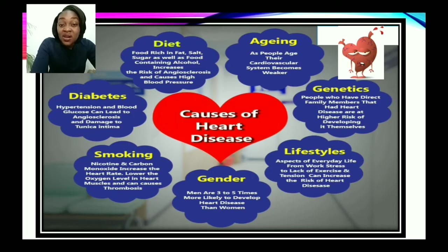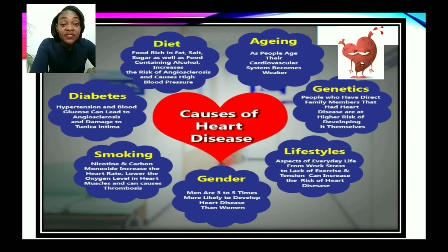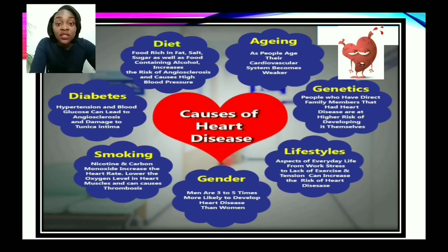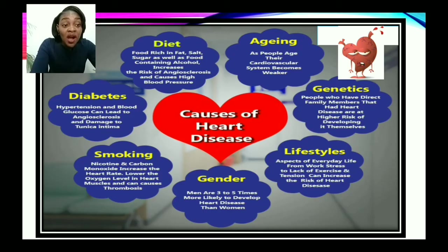What are the causes of cardiovascular disease? First, aging — as people age, their cardiovascular system becomes weaker. The cardiovascular system refers to the blood, blood vessels, and the heart. Next, genetics — people who have direct family members that had heart disease are at a higher risk of developing it themselves. Age and genetics are uncontrollable factors. Lifestyle is another factor — aspects of everyday life, from work stress to lack of exercise and tension, can increase the risk of heart disease.